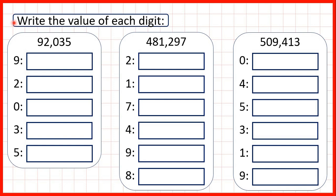We need to write the value of each digit — the amount that each digit in a number represents. First we have 92,035. The 9 is in our ten thousands place value, so that represents 90,000. That's a 9 followed by 4 zeros, because we can see that in our number we have 4 digits after the 9.